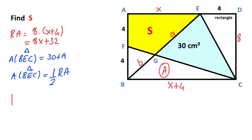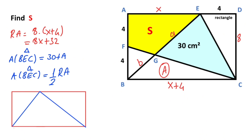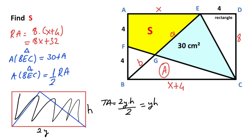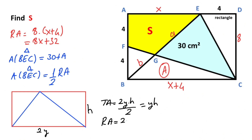Why? Because let's remind ourselves: if we have a rectangle and draw a triangle inside it, calling the base 2y and height h, the triangle area equals 2y times h over 2, so y times h. The rectangle area equals 2y times h. That means the ratio of the triangle area to the rectangle area equals one half. So the area of triangle BEC equals half of the rectangle area.